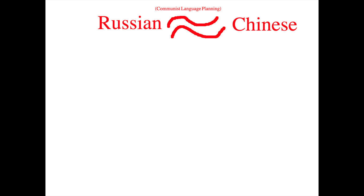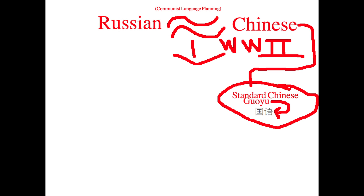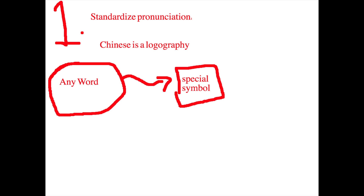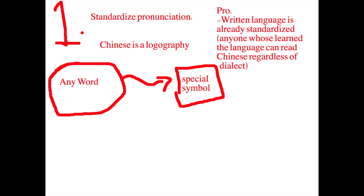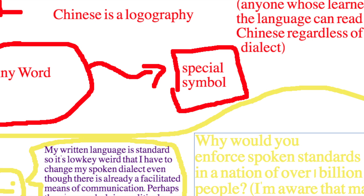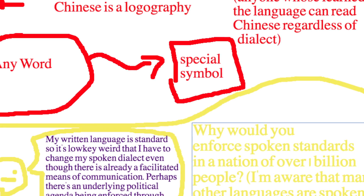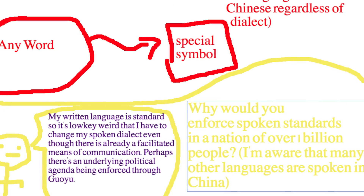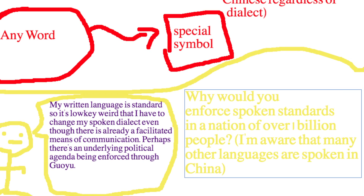There's a definite similarity between Russian and Chinese as far as how the languages have evolved due to communist language planning. Since around World War II, China has been enforcing a form of standard Chinese. The standard Chinese linguistic policy contains communist nuances reminiscent of the USSR's attempts at language reform. The first main component of the language policy was to standardize the pronunciation of the language. Chinese is a logographic language, meaning that each word has its own individual symbol. The benefit of this is that written Chinese is comprehensible to any person who can understand the written language, but the political agenda enforced within the standard Chinese policy suppresses regional dialects, which seems to be a theme of not just communist language planning, but centralist language ideologies in general.